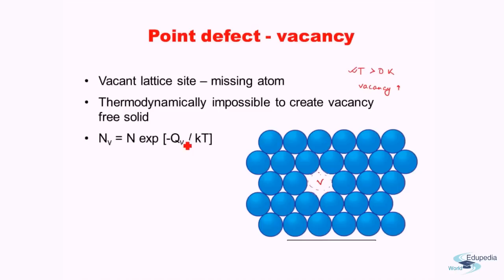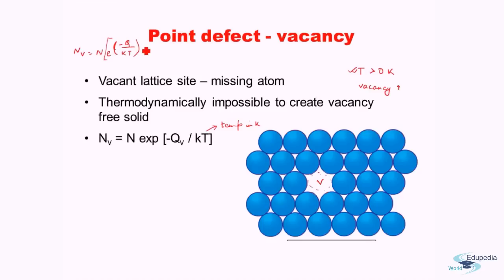N_V is the total number of vacancies present in a thermodynamic state, N is the total number of lattice sites, and the relation is N_V = N · exp(−Q_V / kT), where Q_V is the activation energy for forming a vacancy, k is the Boltzmann constant, and T is temperature in Kelvin. If we increase temperature, the exponent increases because kT is in the denominator — and since it is negative, the whole term increases, thereby the number of vacancies increases as temperature increases.